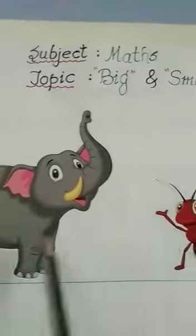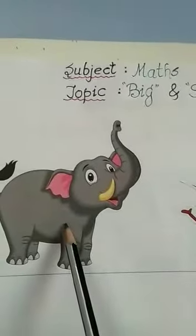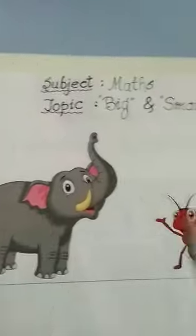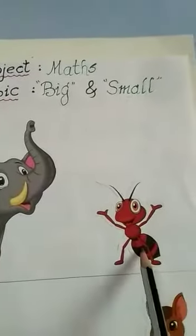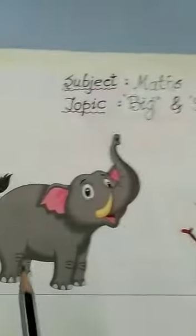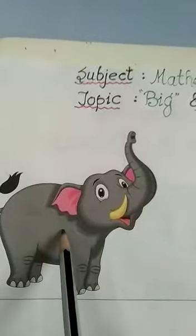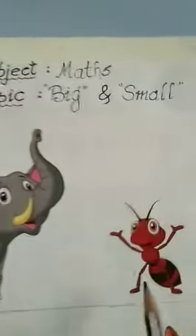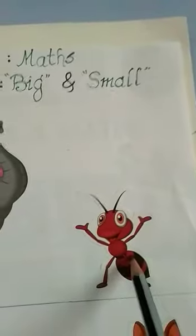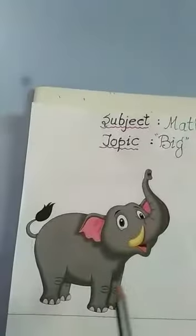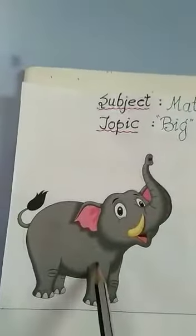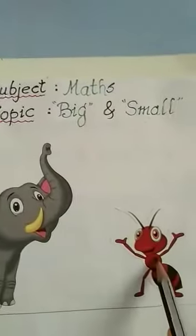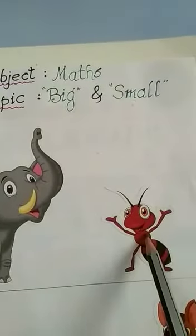So, which one is big? Elephant. And which one is small? Ant. Very good. So, big means big — elephant is big. And small means Chota — the ant is small.